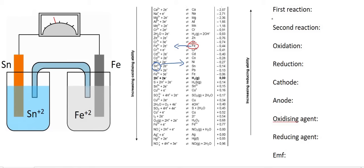So the first reaction — it doesn't matter which one you choose — Fe is going to become Fe2+ plus 2 electrons. The second one is going to be Sn2+ plus 2 electrons giving us Sn. Notice that one of them goes from right to left, and the other one goes from left to right.